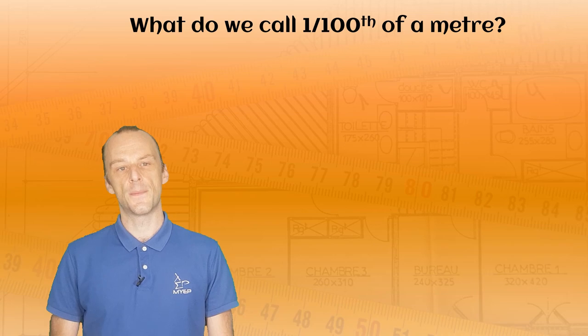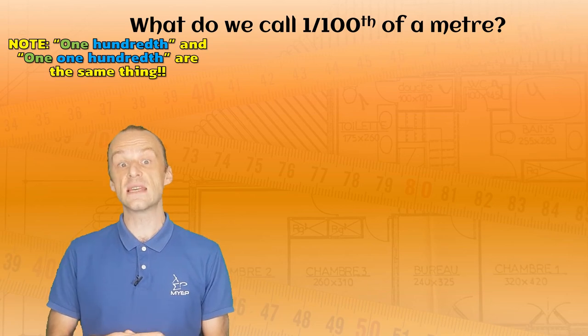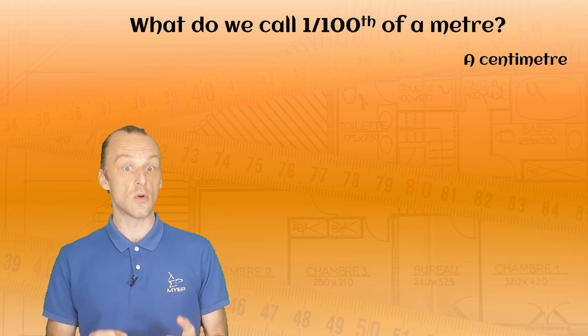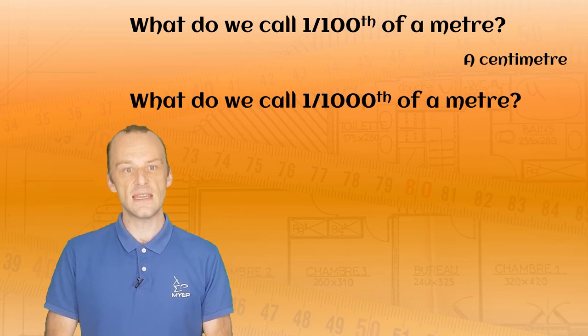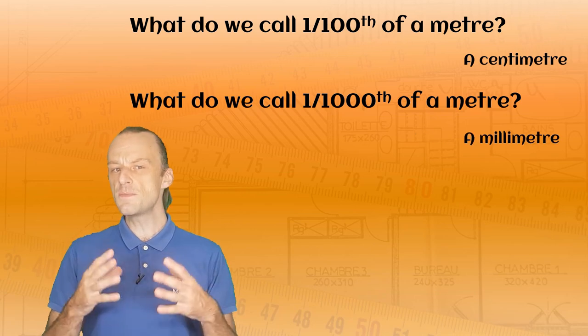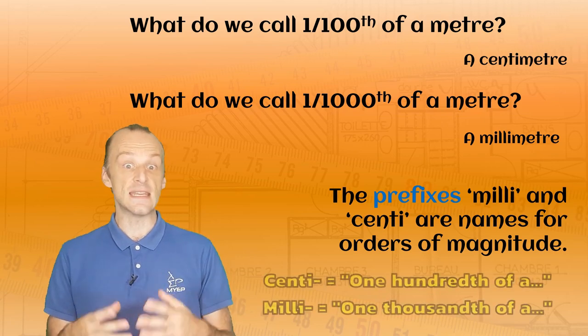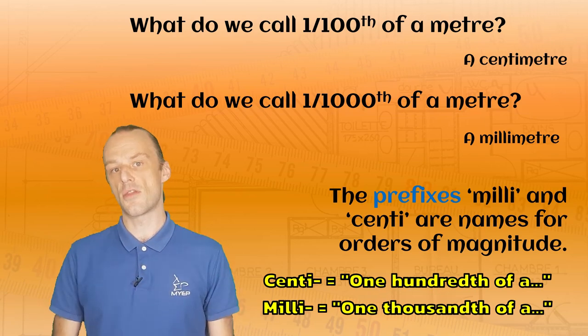A couple of quick questions. Be ready to pause if you want. What do we call one hundredth of a meter? You might use these quantities every day, but one one hundredth of a meter is one centimeter. Let's try another. What do we call one thousandth of a meter? If you look at the first answer, this might be a little bit easier, but one thousandth of a meter is a millimetre, and so these prefixes centi and milli are the names for orders of magnitude. Centi basically means one hundredth of a, and milli means one thousandth of a.